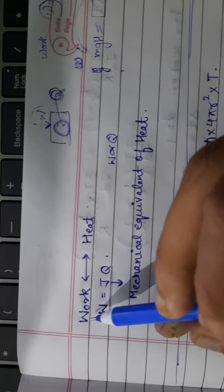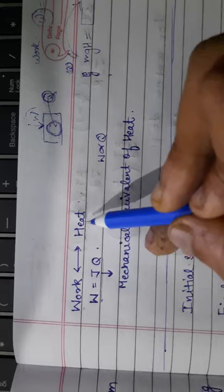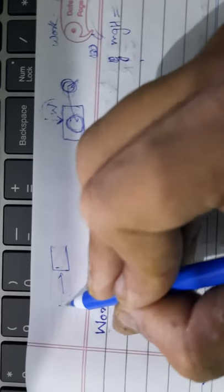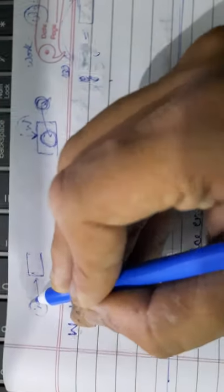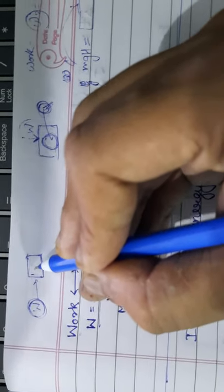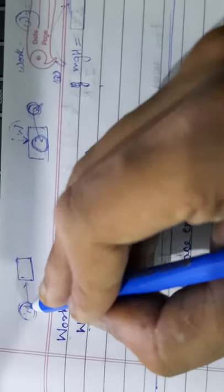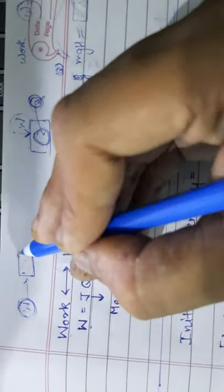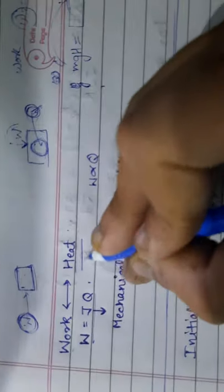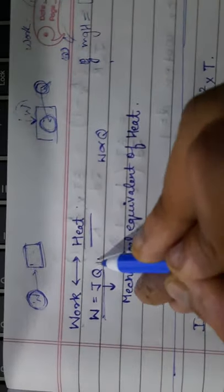But the mechanical equivalent of heat concept works where work is converted to heat energy, or heat energy is converted to work. Let's suppose there is a system and someone does some amount of work W on it. The entire W amount of work gets converted into heat energy and used by the system. This conversion has the formula: W is equal to JQ.